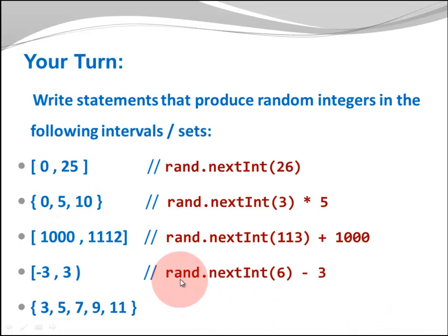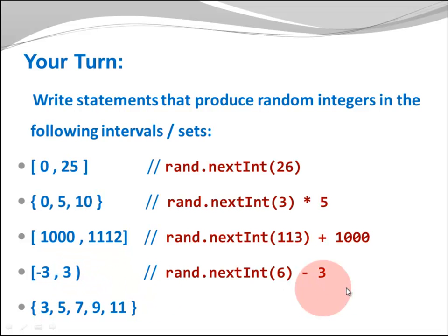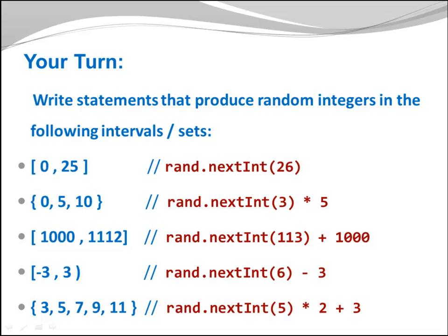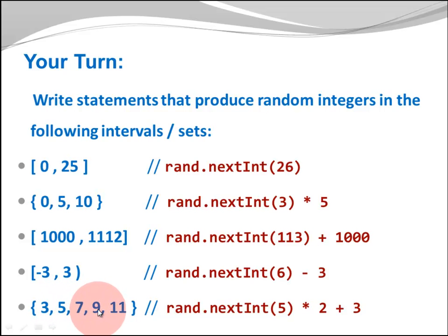In this example we have rand.nextInt(6) because we have minus 3, minus 2, minus 1, 0, 1, 2 — 6 different choices. Notice the 3 here is exclusive, and we are subtracting 3 because we are starting at minus 3. Last but not least, rand.nextInt(5) — we have 1, 2, 3, 4, 5 different choices. We are multiplying by 2 because here we have a step size of 2: 3 plus 2 is 5, plus 2 is 7, plus 2 is 9. And we also add 3 because we didn't start at 0, we started at 3.